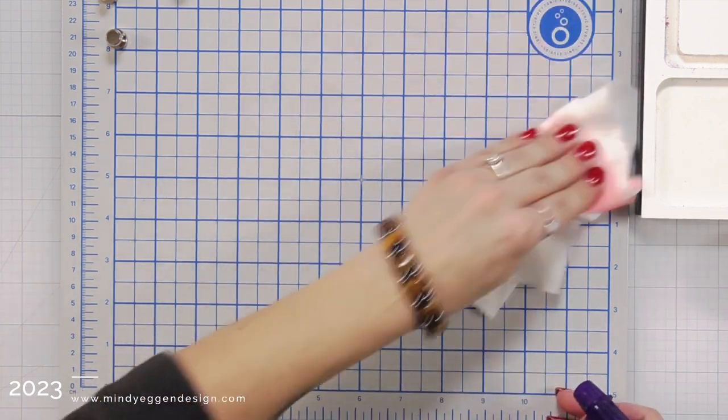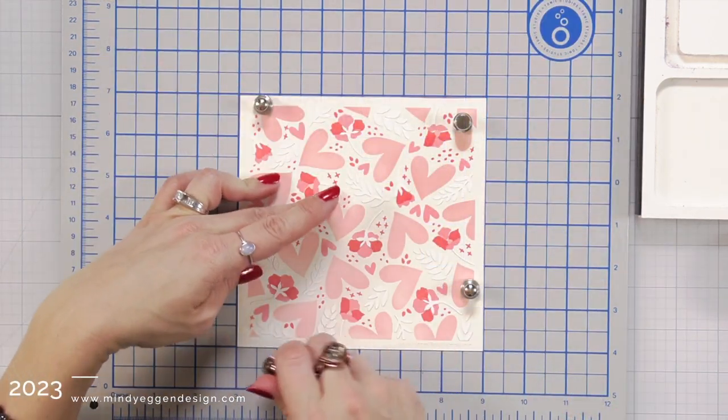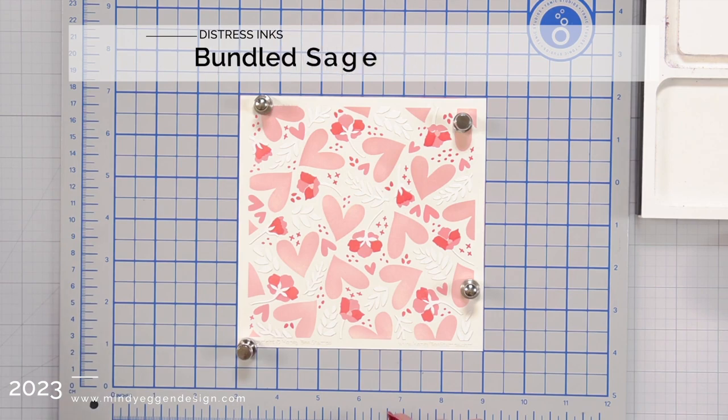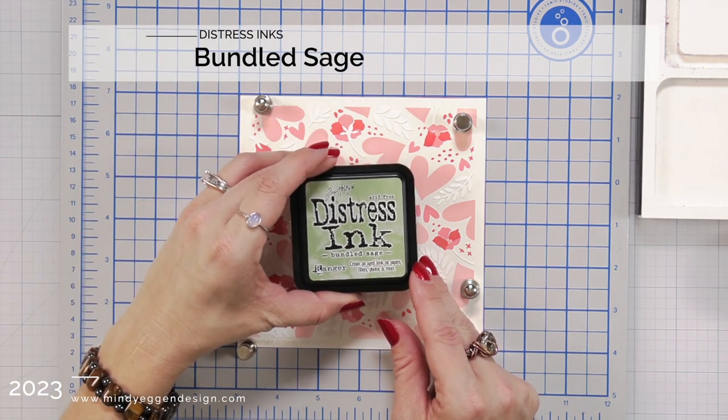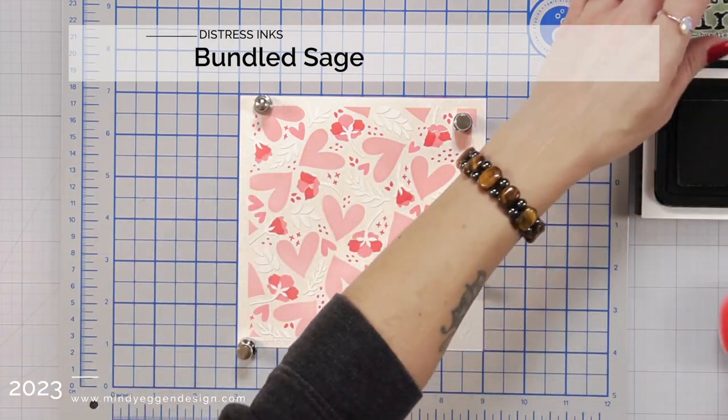So I quickly just wiped up my work surface here, picked up all that extra red because I don't want that to blend into my green that I'm going to be using, which is the bundled sage.